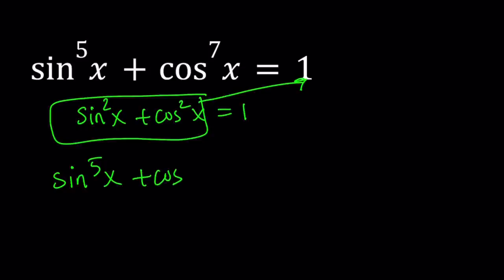Replace one with sine squared x plus cosine squared x. Obviously, replacing sine squared plus cosine squared with one would be better in most cases, but in some cases it's the other way around.